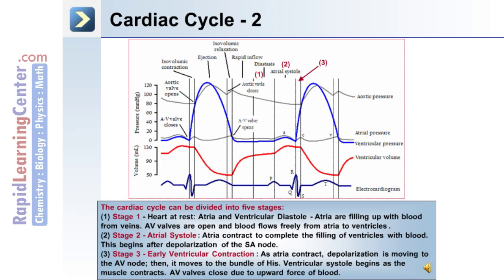The cardiac cycle can be divided into five stages. Stage 1: Heart at rest, atria and ventricular diastole. Atria are filling up with blood from the veins. The atrioventricular or AV valves are open and blood flows freely from the atria to the ventricles.